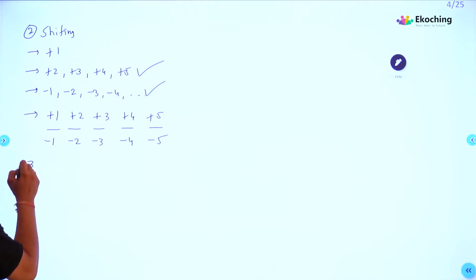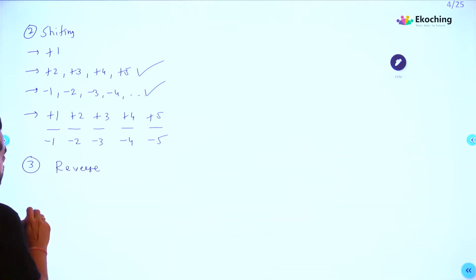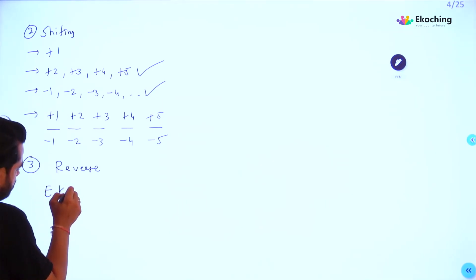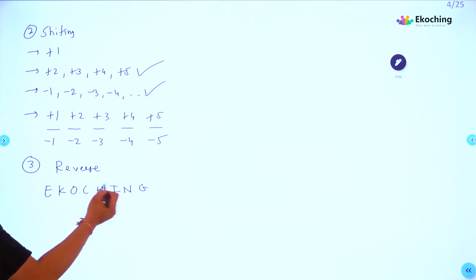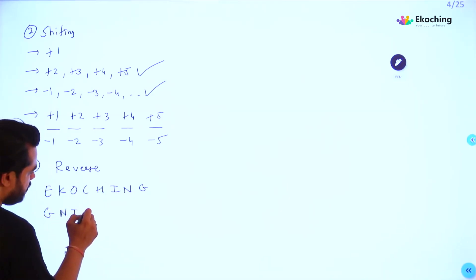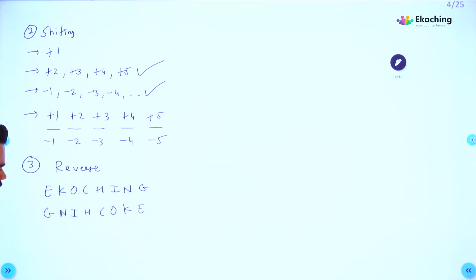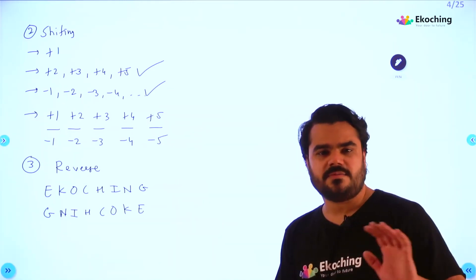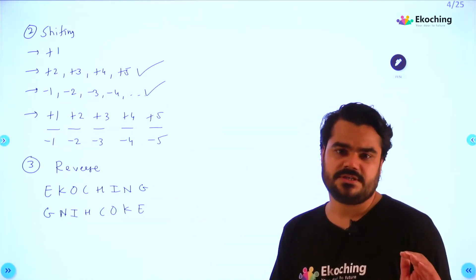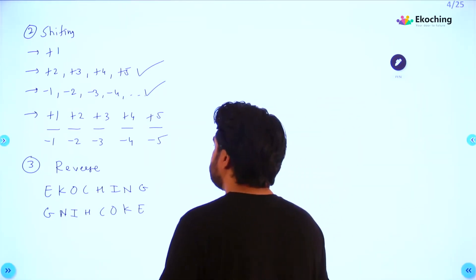The third one is reverse. For example, e-coaching is there. If you reverse its letters, then G, N, I, H, C, O, K, E. This is the changed message. We reversed it. We reversed it, that's it.